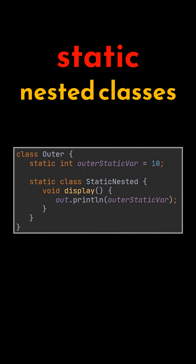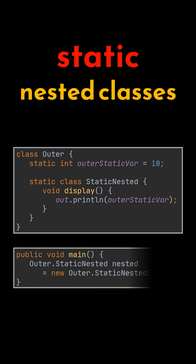The static keyword can also be applied to nested classes. These classes can access static members of the outer class and can be instantiated without an instance of the enclosing class. In this example, StaticNested is a static nested class of the outer class.